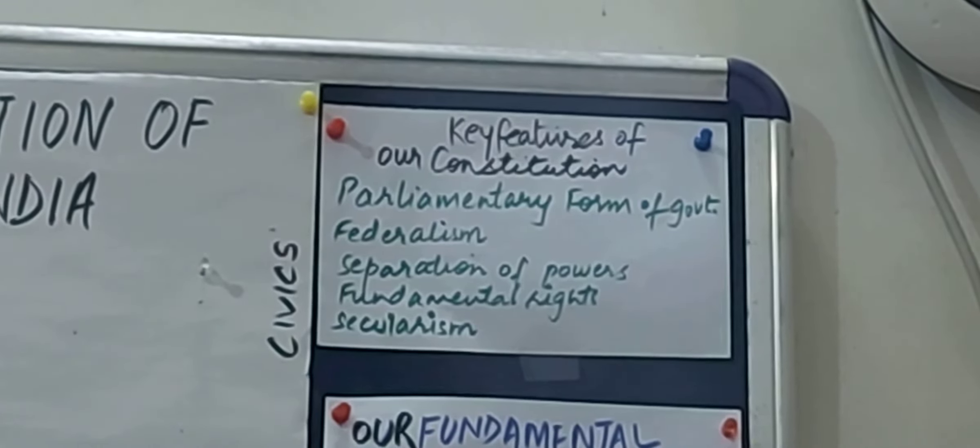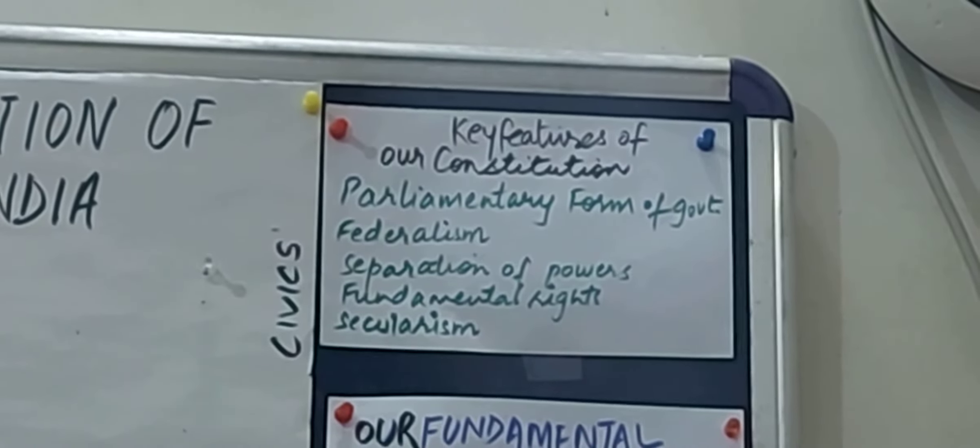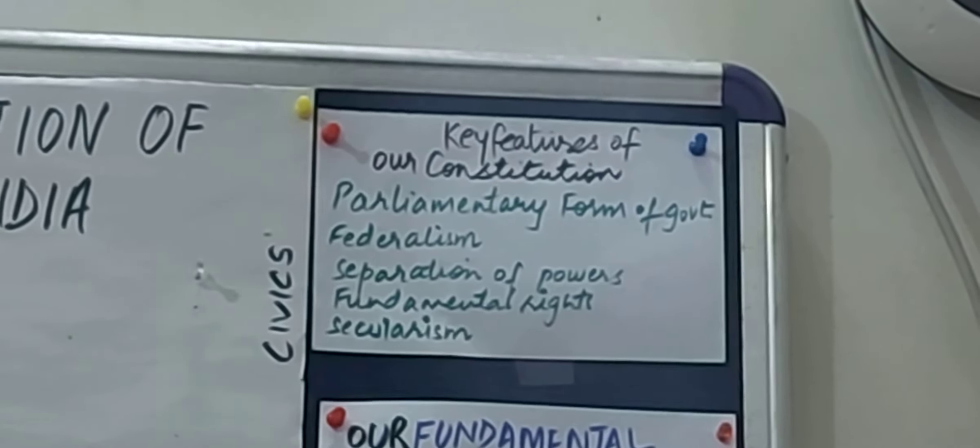Now moving on to the next feature of the constitution, that is the fundamental rights. Children, we all know that our constitution guarantees us 6 fundamental rights. These rights include the right to equality, the right to freedom, right against exploitation, right to freedom of religion, cultural and educational rights, and the right to constitutional remedies.